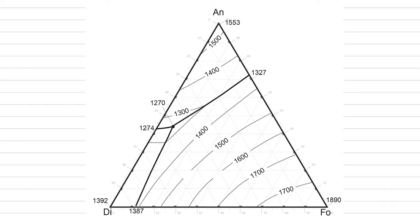This is the last lecture in phase diagrams. One thing we know about nature is that nature can be complex, and a binary explanation of a system might not be appropriate. We could add a third dimension if we move to ternary diagrams instead of using binary. The purpose of this lecture is to describe and give you an example of how to use a ternary phase diagram to explain a basaltic melt.